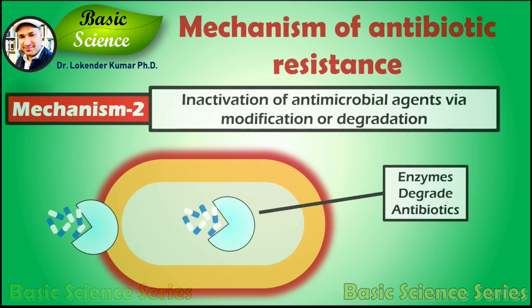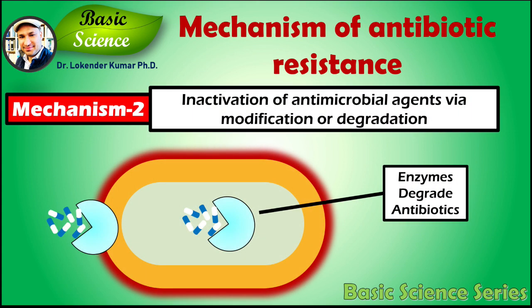The second mechanism is the inactivation of antimicrobial agents via modification or degradation. Bacteria preserve themselves by destroying the active component of the antimicrobial agent. A classical example is the hydrolytic deactivation of the beta-lactam ring in penicillin and cephalosporins by the bacterial enzyme beta-lactamase. This enzyme degrades the antibiotic so it is no longer effective against its target.